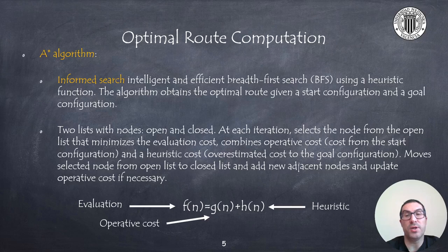On the other hand, Dijkstra algorithm performs an informed search, which means that its resolution is guided by the knowledge of the goal configuration to be reached. It uses an intelligent and efficient search algorithm by maintaining two lists with nodes, the open and the closed lists. At each iteration, a node is selected from the open list minimizing the valuation cost, the function F on the formula below, consisting of an operative cost and a risk cost.